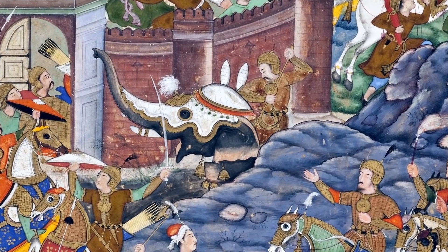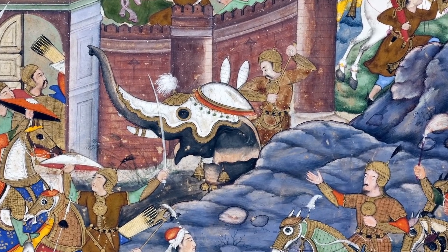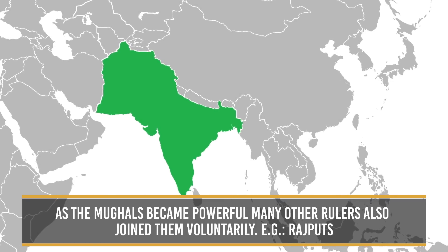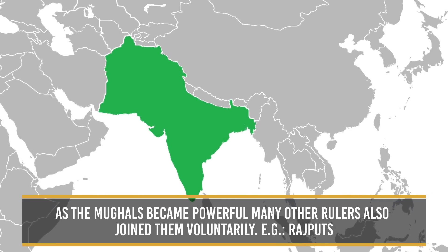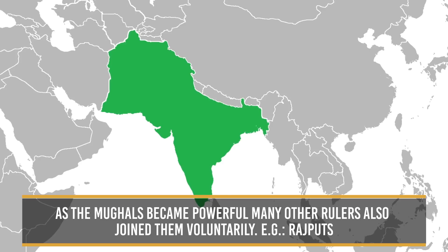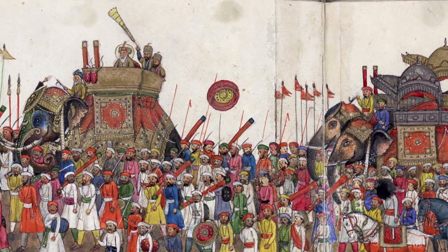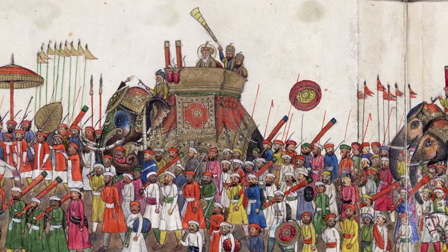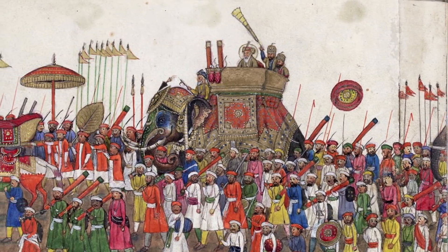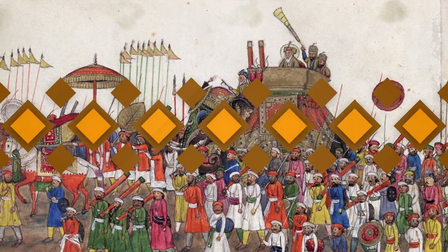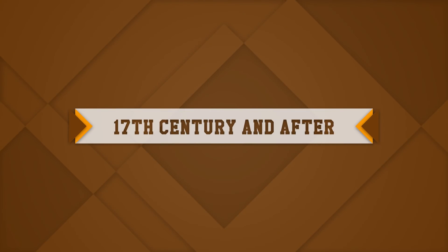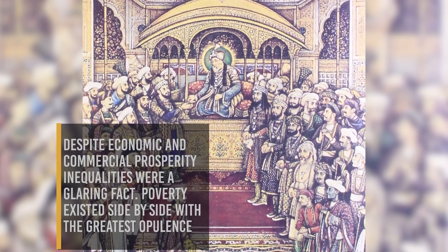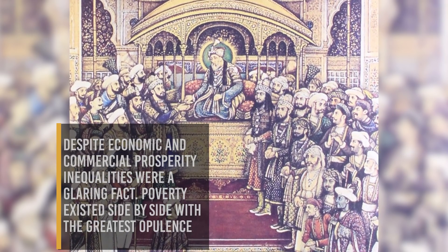Mughal Relations with Other Rulers: The Mughal rulers campaigned constantly against rulers who refused to accept their authority. However, as the Mughals became powerful, many other rulers also joined them voluntarily — for example, the Rajputs. The careful balance between defeating and not humiliating their opponents enabled the Mughals to extend their influence over many kings and chiefs. Despite the economic and commercial prosperity of the 17th century, inequalities were a glaring fact.